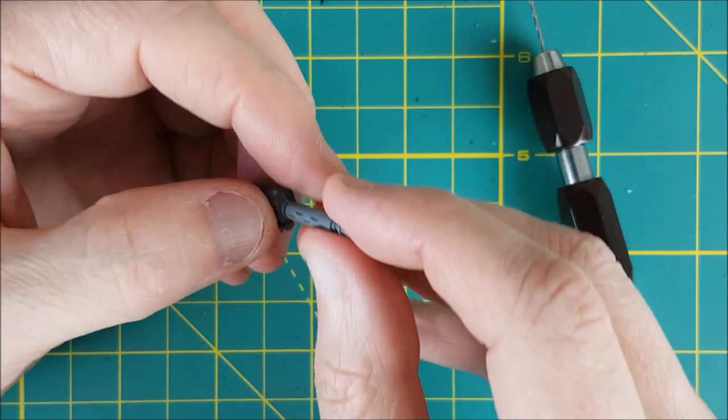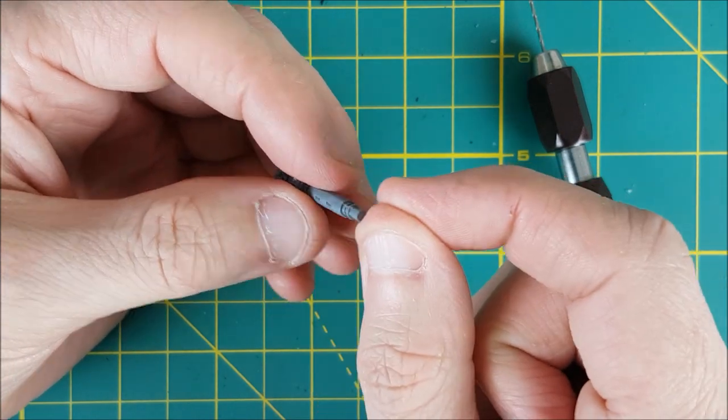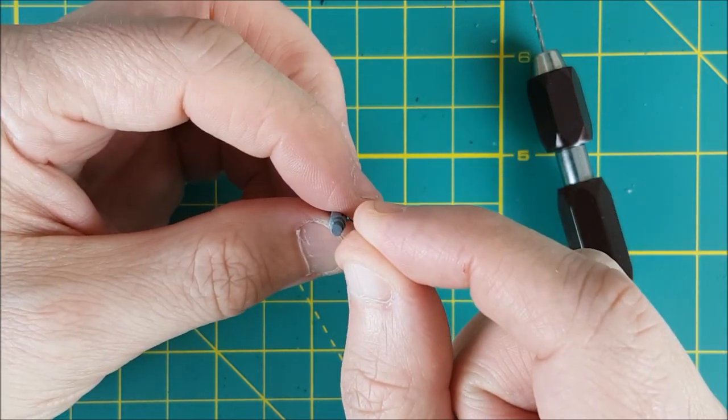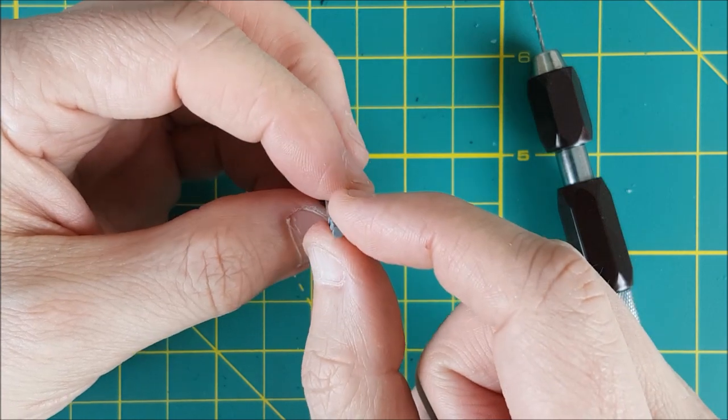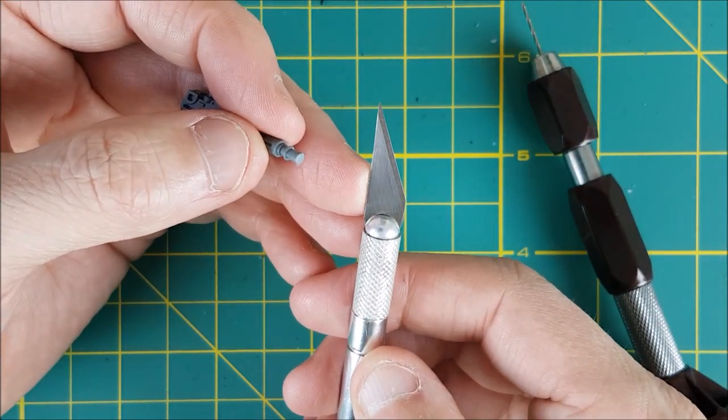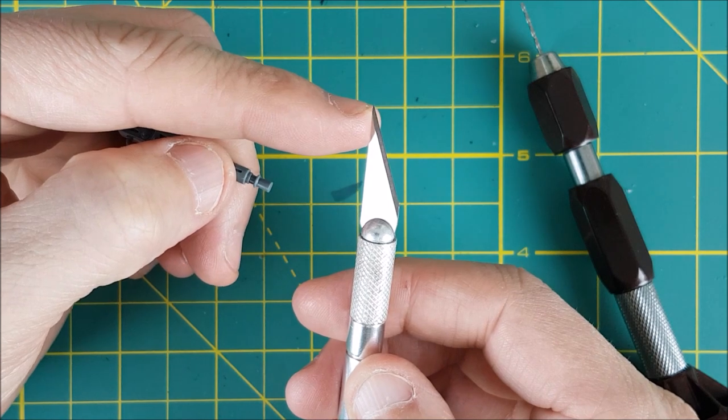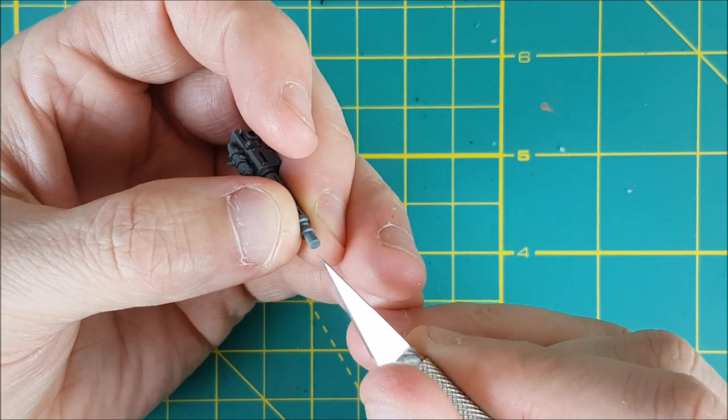I've seen some people use a needle to poke a starter hole, but I personally would never do this because I'm sure I would stab myself. Instead, use your hobby knife and set the tip in the exact center of the barrel. The tip is sharp enough that it won't move once it touches the plastic.